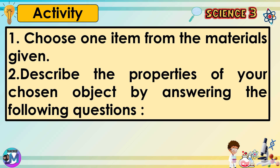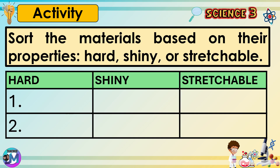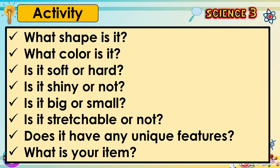1. Choose one item from the materials given. 2. Describe the properties of your chosen object by answering the following questions. Sort the materials based on their properties — hard, shiny, or stretchable. What shape is it? What color is it? Is it soft or hard? Is it shiny or not? Is it big or small? Is it stretchable or not? Does it have any unique features? What is your item?